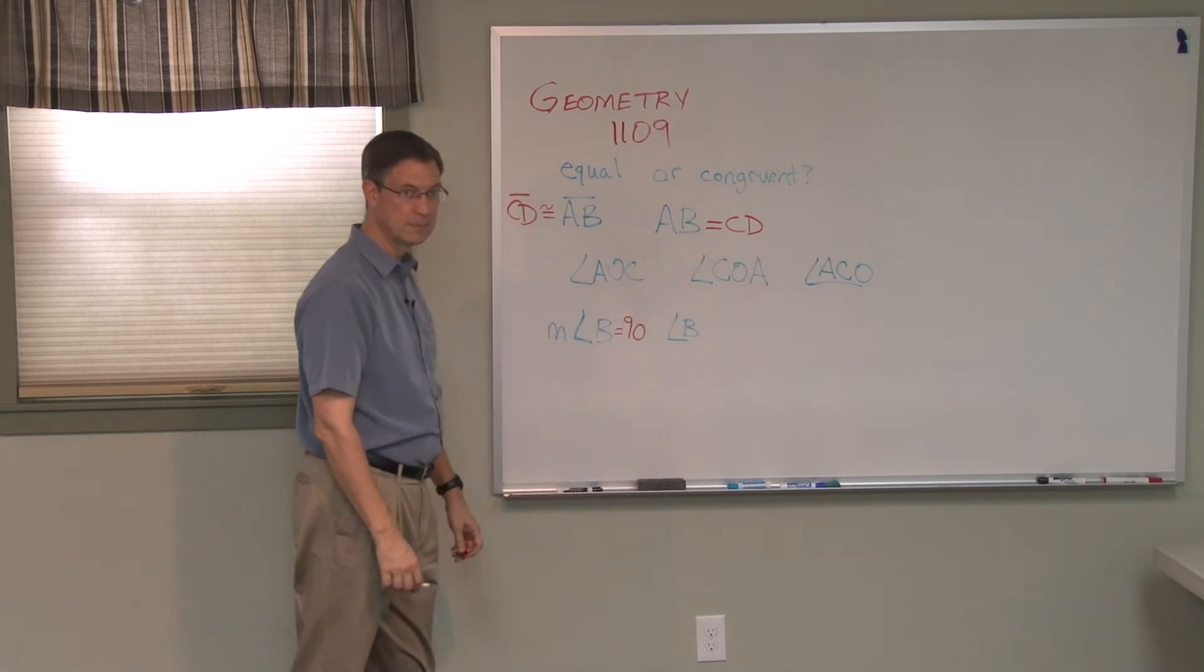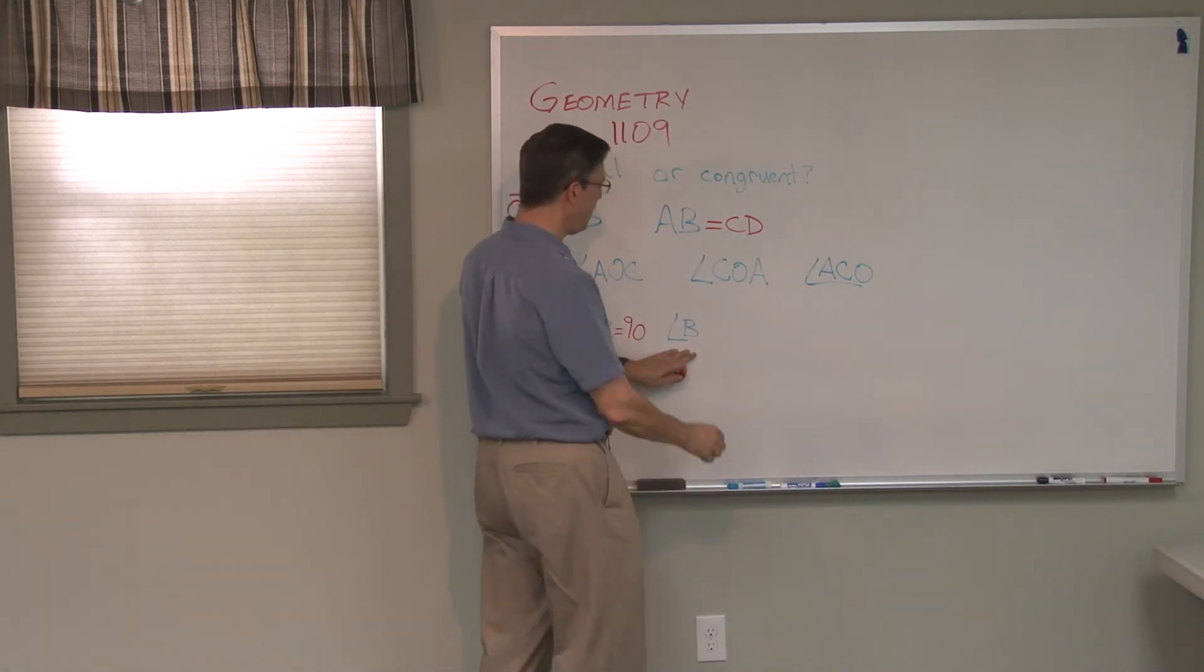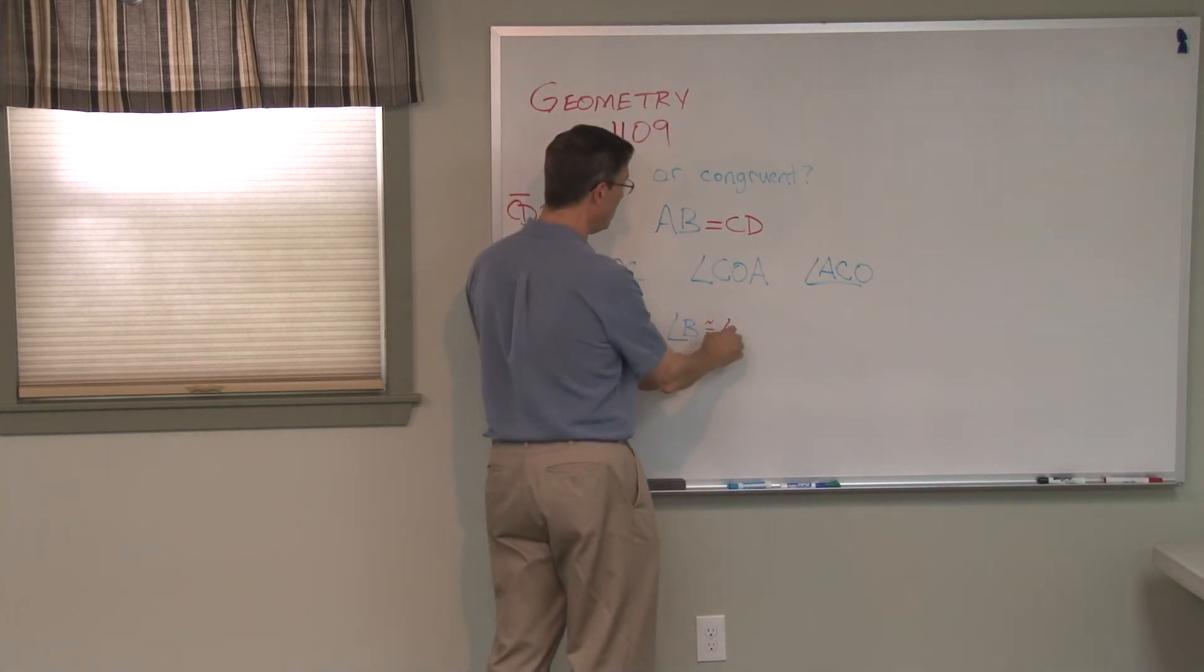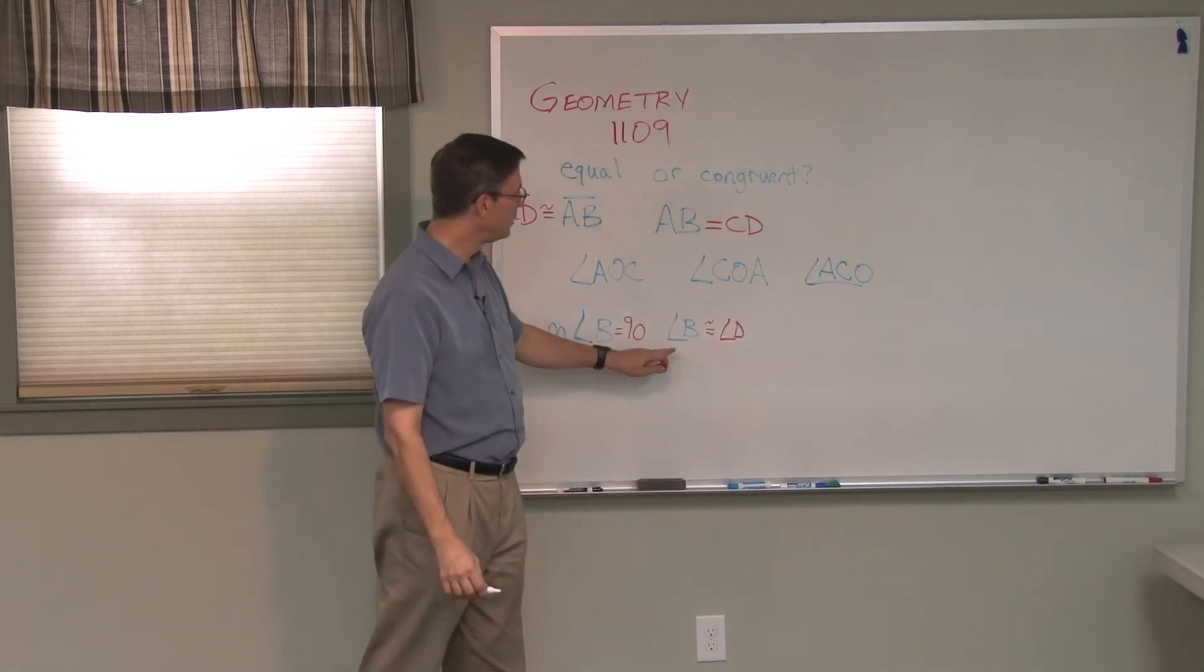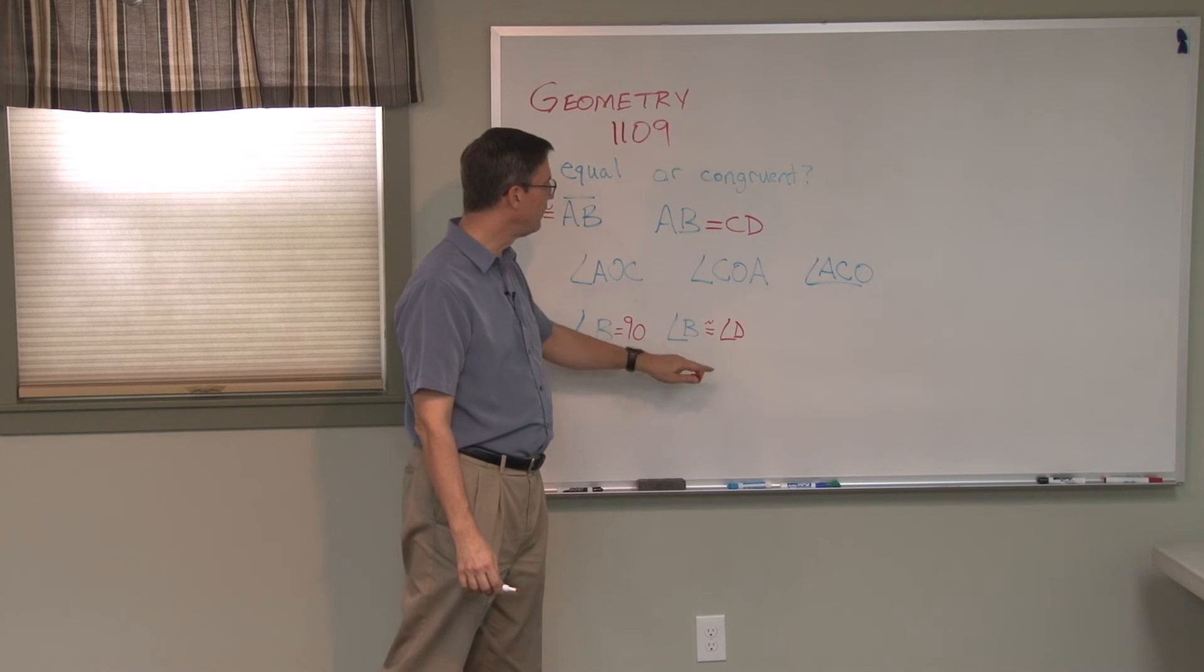I would not say angle B equals 90 degrees, but I could say angle B is congruent to, maybe, angle D. I don't put the m in front of it if they're congruent; we're talking about the shape.